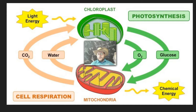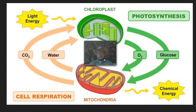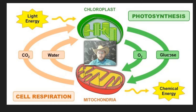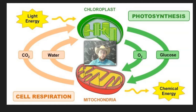Chloroplasts trap the energy of the sun to power the process of taking carbon dioxide from the atmosphere and putting it inside of a molecule such as glucose. And in doing so, they also break down water and make oxygen.